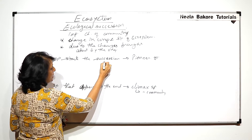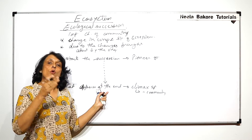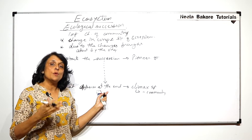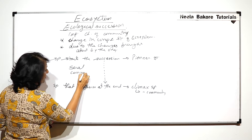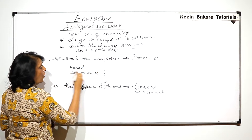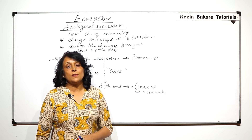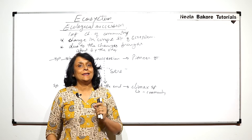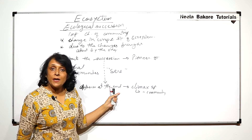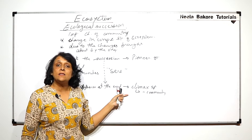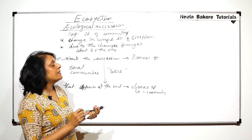Between the first and the last there are many species or communities which will be replaced. Those are known as seral communities, or we also call it sere. So the one which starts is the pioneer community, then there are seral communities, and at the end the community which stays irrespective of the changes brought about by the seral communities is termed the climax community.